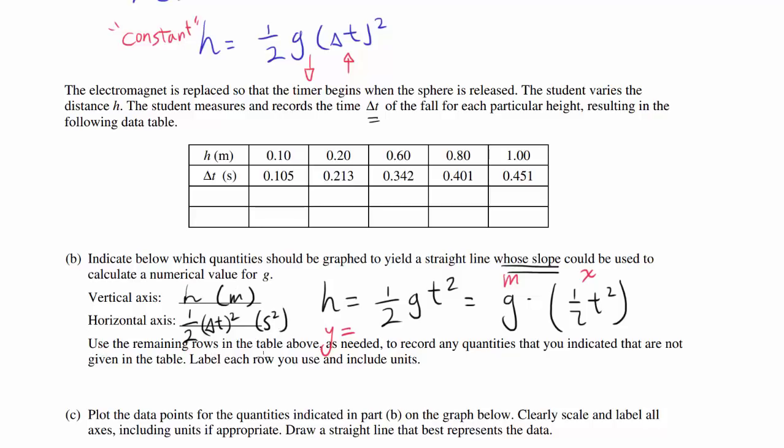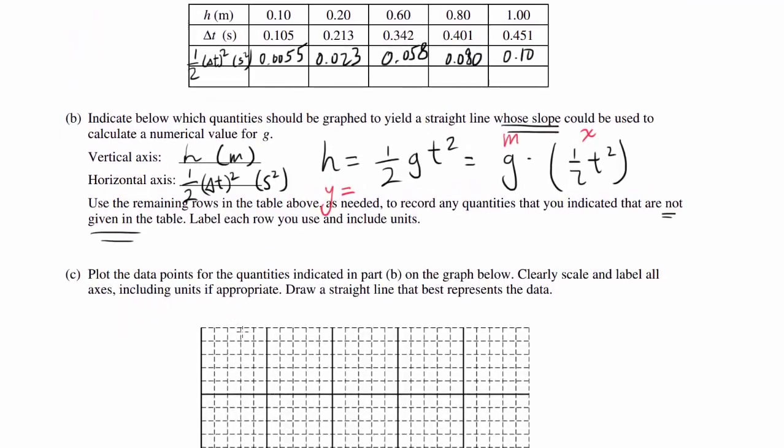Use the remaining rows in the table to record any quantities that are not given. We need to fill out 1/2 delta t squared in seconds squared. Evaluating each of these, we get 0.0055, 0.023, 0.058, 0.080, and 0.10.